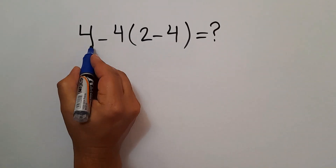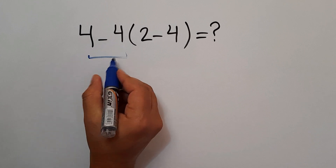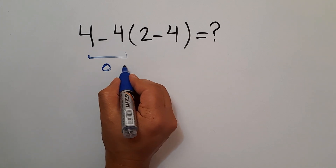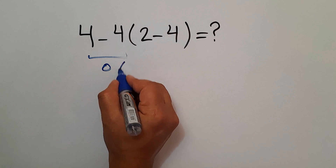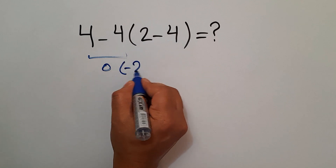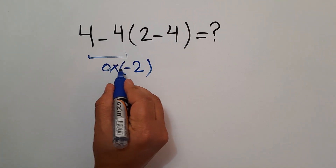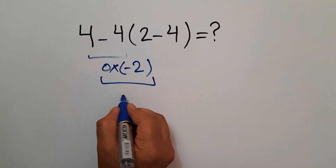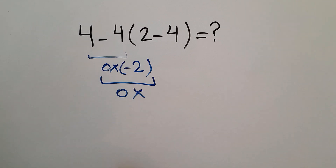4 minus 4 equals 0. And 0 times 2 minus 4 gives us negative 2. So, 0 times negative 2 equals 0. But this answer is not correct.